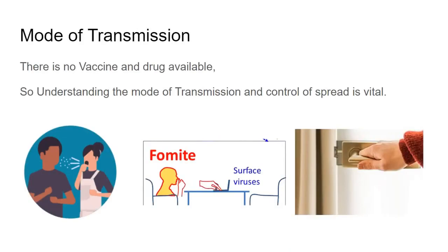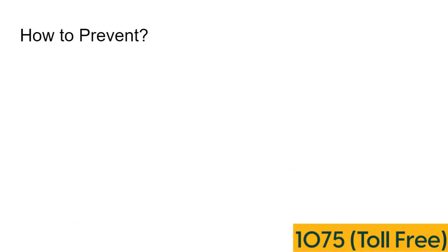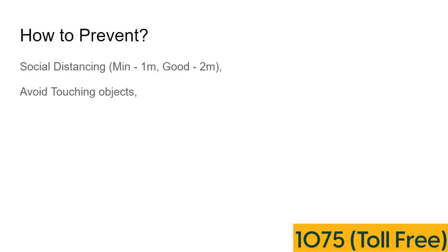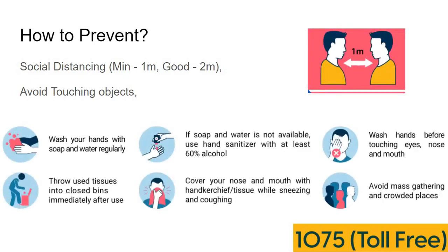To avoid this, we can use our elbows when we need to touch surfaces. There are two key strategies in preventing COVID-19: social distancing and hand hygiene. The Government of India and WHO recommend 1 meter distance — 2 meters is even better. Avoid touching objects, wash hands regularly with soap and water, use alcohol sanitizer with at least 60% alcohol, avoid touching eyes, nose and mouth, throw used tissues into the dustbin immediately, use a handkerchief or tissue while coughing, and avoid mass gatherings in crowded places.